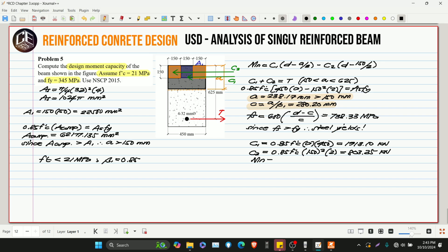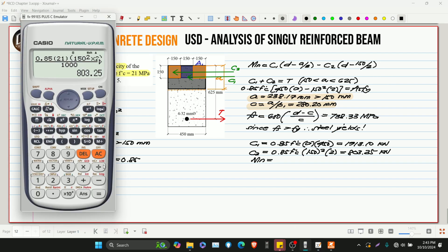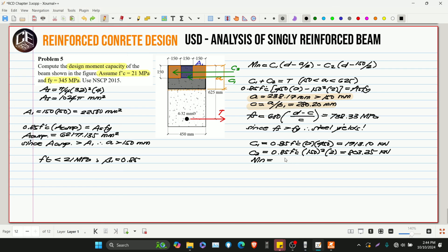Therefore, we can solve for the nominal moment. So, 1913.10 multiplied by D which is 625 minus A over 2. Our A over 2 is 238.17 over 2. Then, minus C2 which is 803.25 multiplied by D minus 150 over 2. Then, divide by 1,000 to make it kilonewton meter. So, this is 526.08 kilonewton meter.